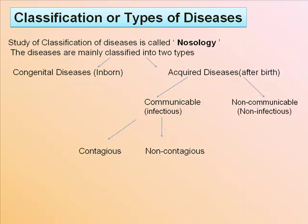Diseases are mainly classified into two types: congenital diseases, which are inborn, and acquired diseases, which occur after birth. Acquired diseases are communicable — that is, infectious — which are contagious and non-contagious, and non-communicable, which are non-infectious.